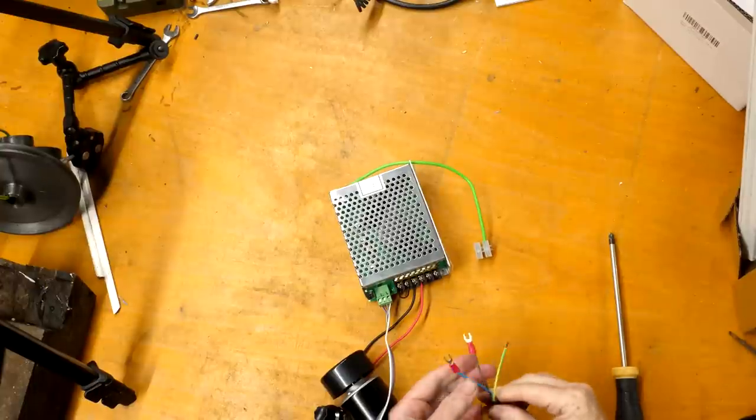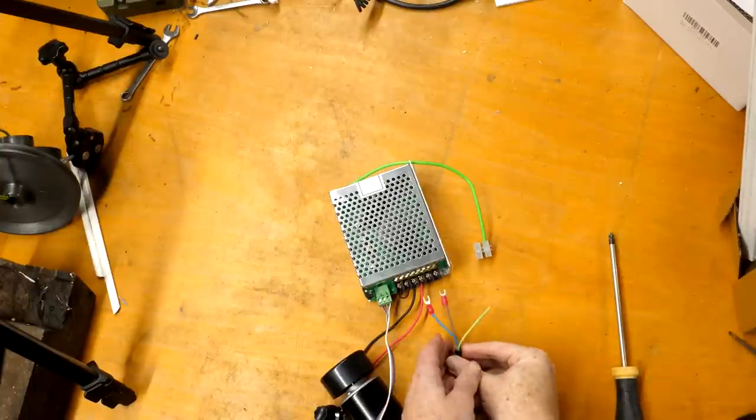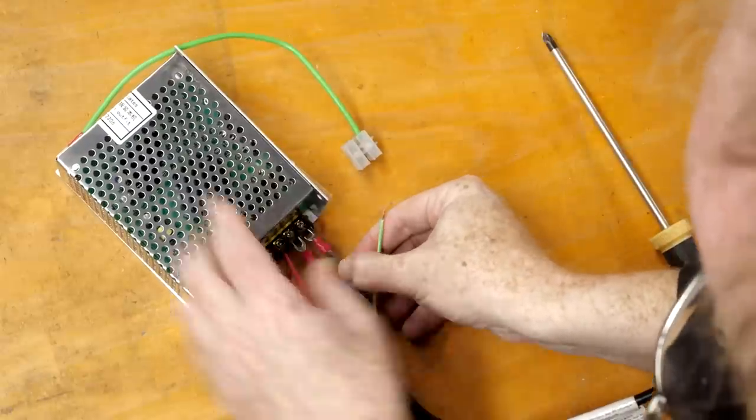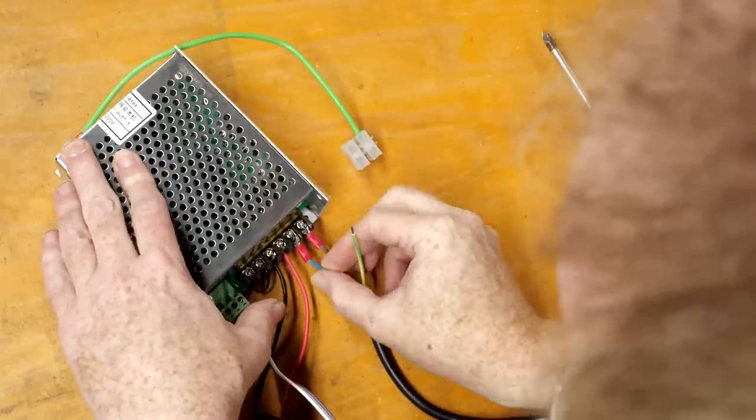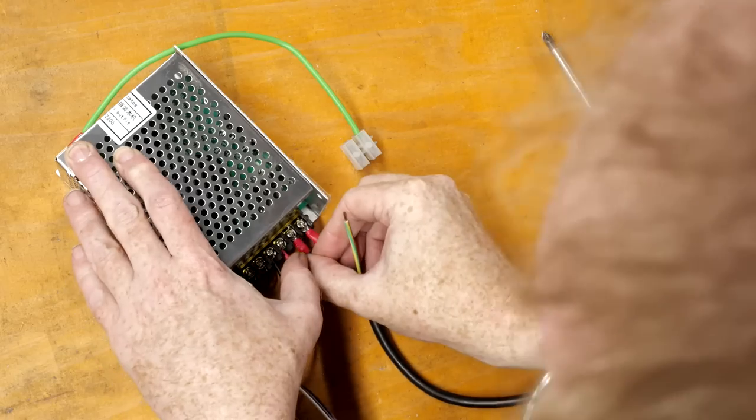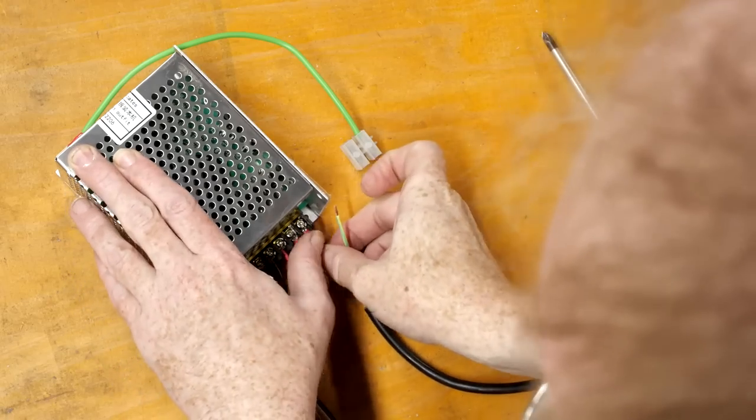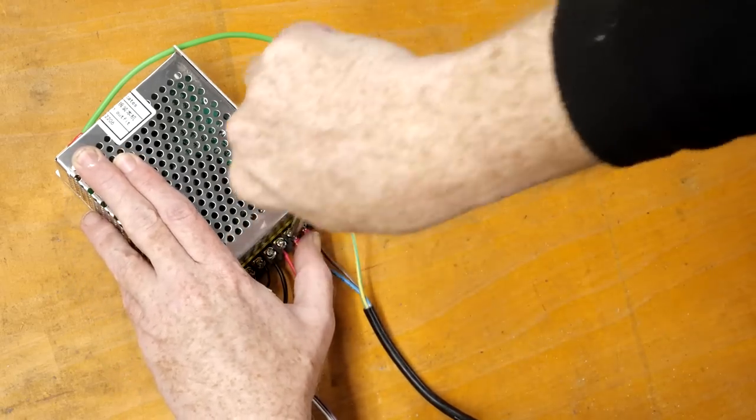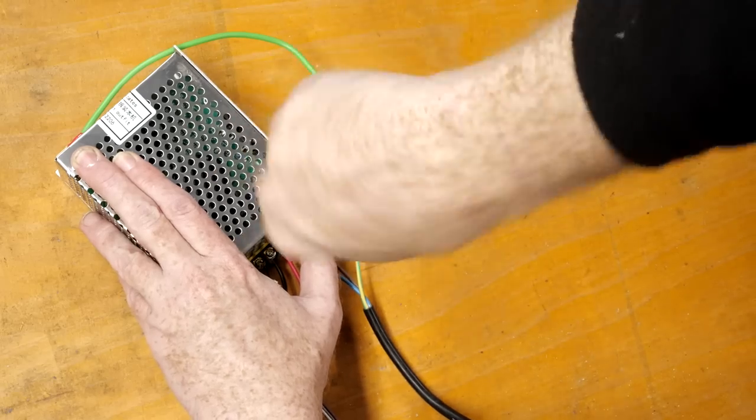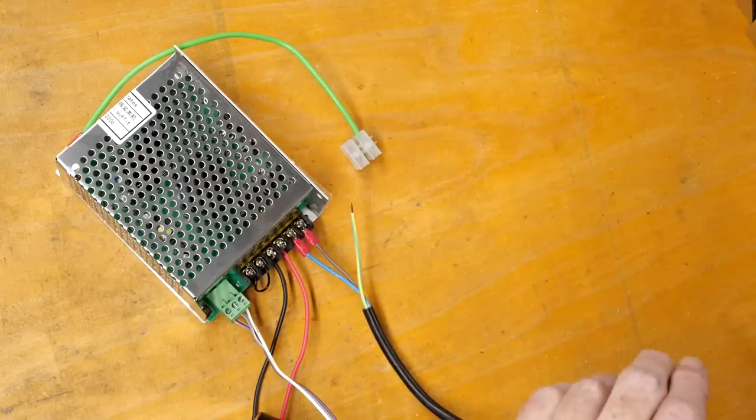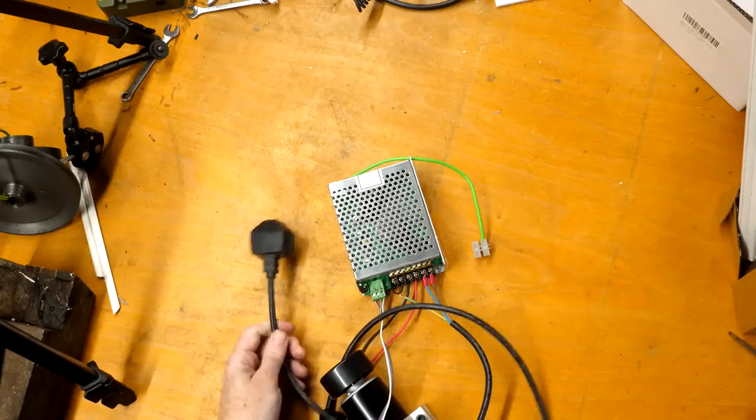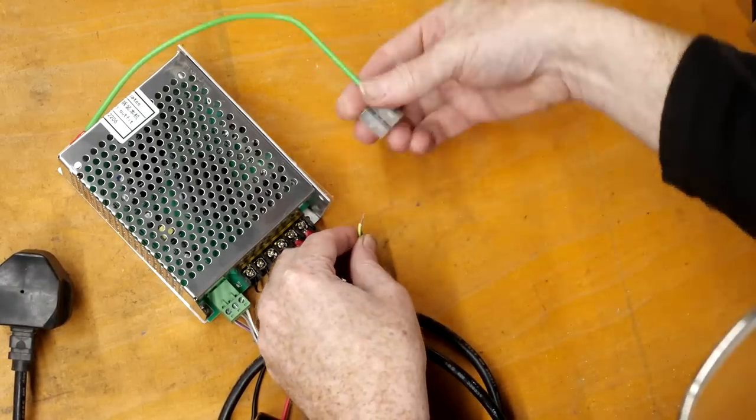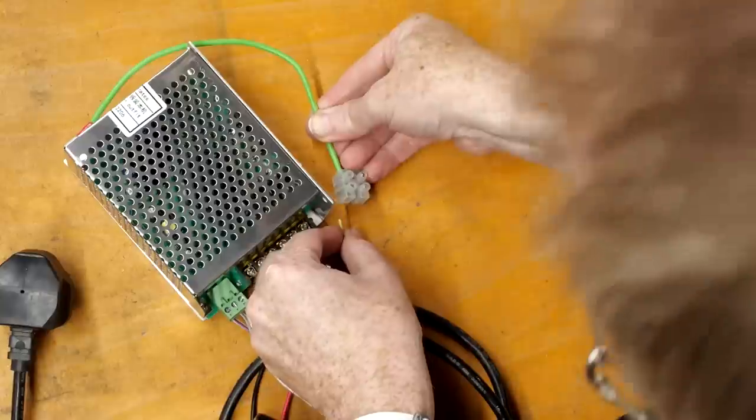I cut the IEC connector off a spare mains cable and crimped connectors onto the end to make sure I got an easy, reliable connection to the input terminals. I then connected the earth wire of the mains cable to the earth extension using a terminal block.